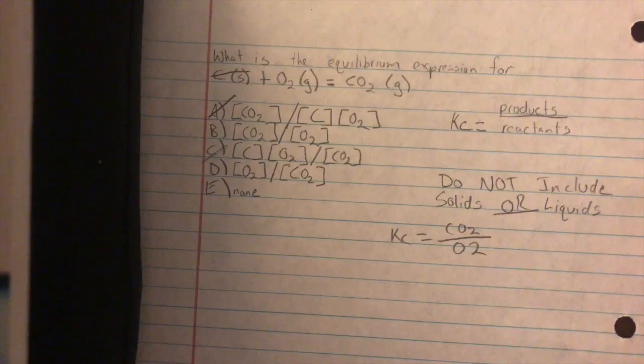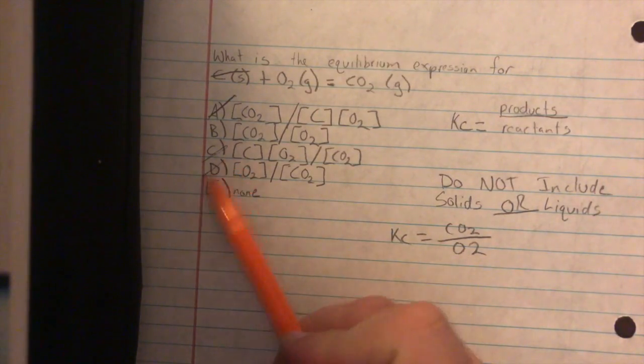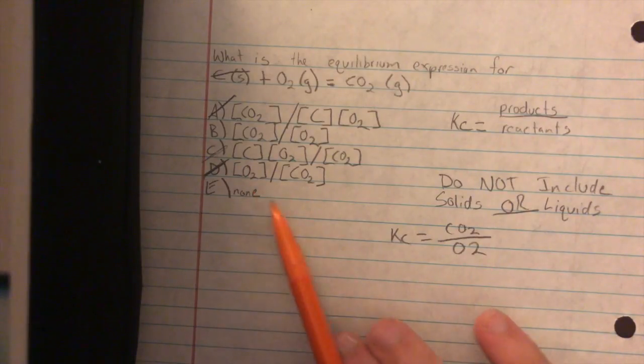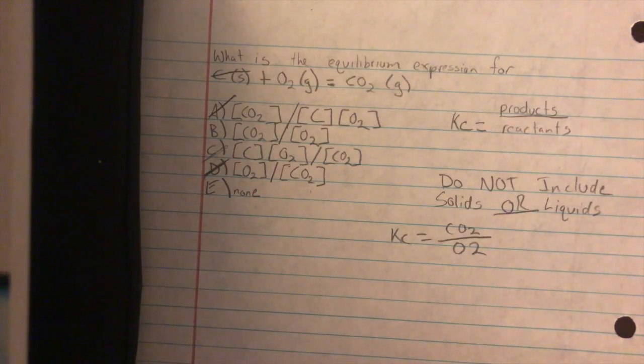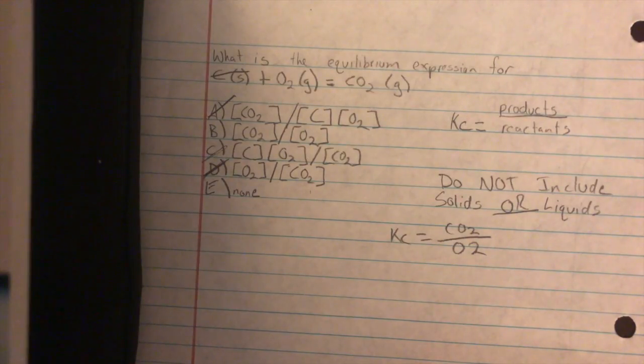Now the only choices we have left are B, D, and E. We know it can't be D because that would be reactants over products, and the equilibrium expression is products over reactants. Having our final answer be B.